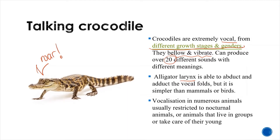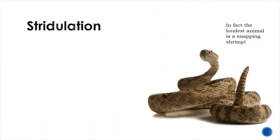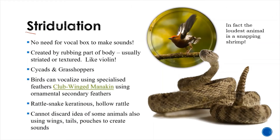Vocalization in numerous animals is usually restricted to nocturnal animals — animals that live at night — or animals that live in groups or take care of the young. Animals don't need vocal boxes to make sounds. Some animals vocalize using stridulation, which is rubbing parts of the body together — usually parts that are striated or textured — to create sound, much like a violin. You might know this technique from animals like cicadas and grasshoppers.